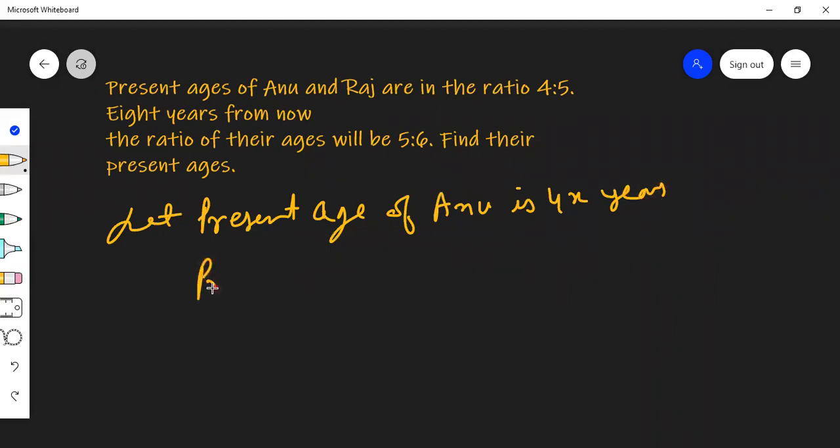And then present age of Raj. Second person is Raj and that would be 5x years.